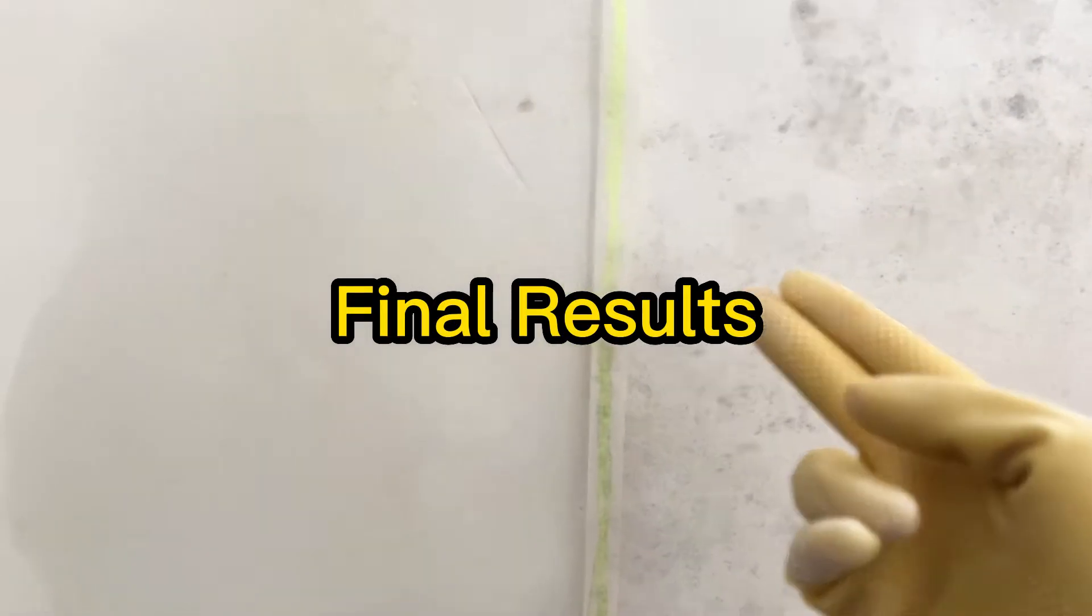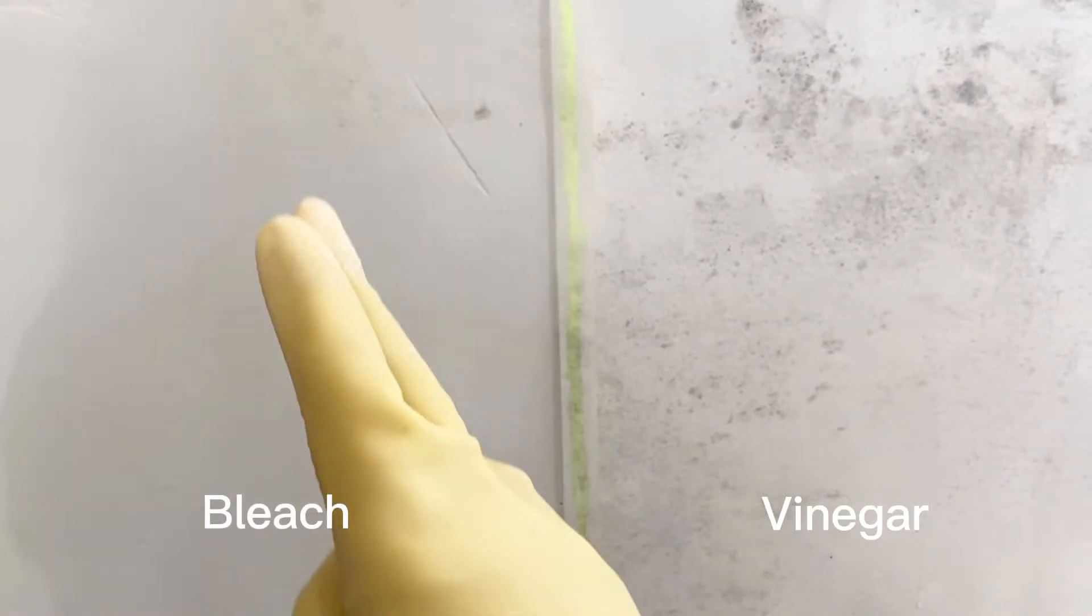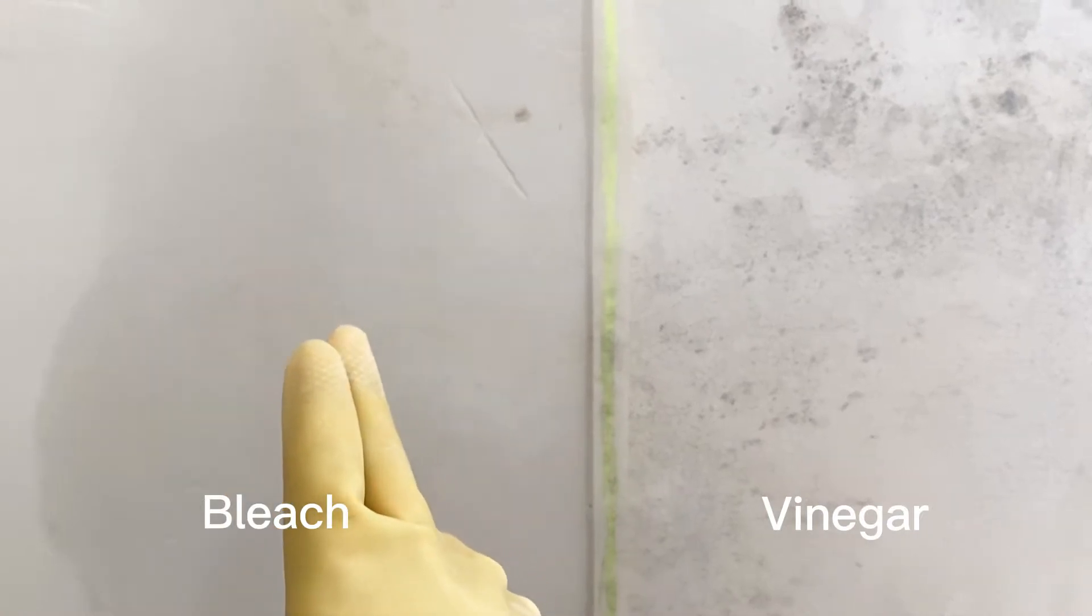All right so here's the final results. As you can see this side is using bleach solution and this side is using the white vinegar solution. And from the appearance of things the bleach did a better job. It's just a lot cleaner. There's a couple stains here still. Whereas on the white vinegar side as you can see it's still very stained. Not white at all.